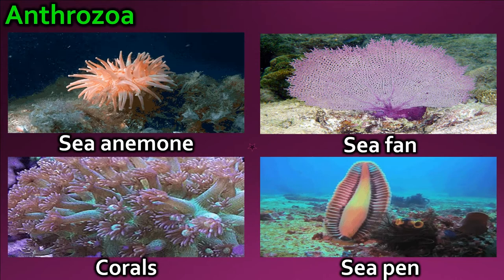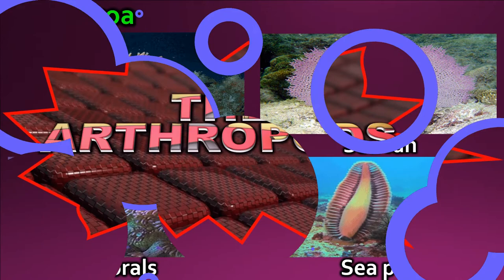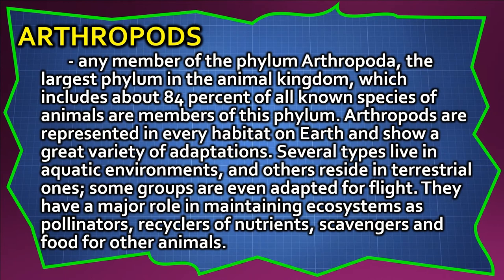The arthropods. Any member of the phylum Arthropoda — the largest phylum in the animal kingdom — which includes about 84% of all known animal species. Arthropods are represented in every habitat on Earth and show a great variety of adaptations. Several types live in aquatic environments and others reside in terrestrial ones; some groups are even adapted for flight. They have a major role in maintaining ecosystems as pollinators, recyclers of nutrients, scavengers, and food for other animals.